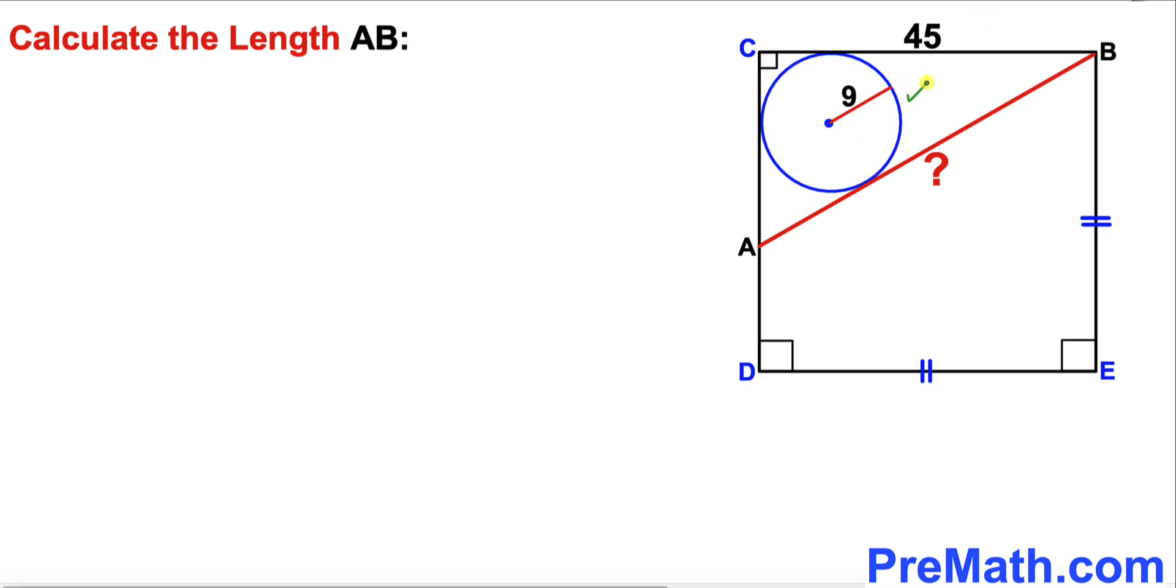Moreover, this circle with radius 9 is inscribed in this square such that line AB is tangent to the circle. Now we are going to calculate the length of segment AB.